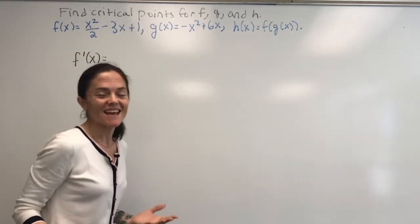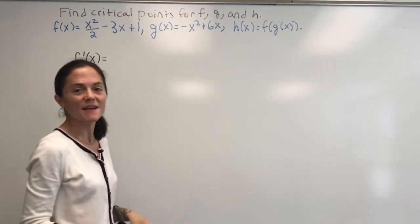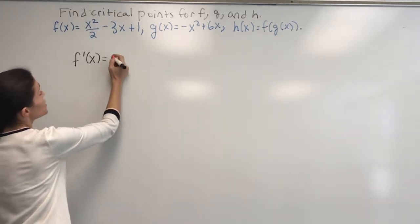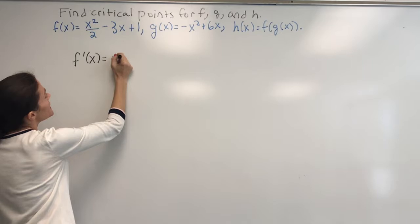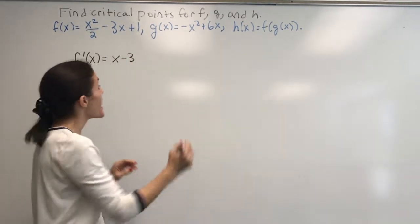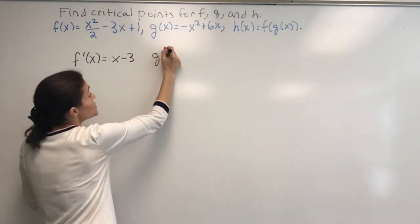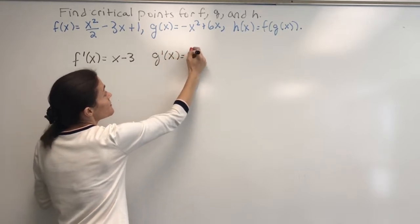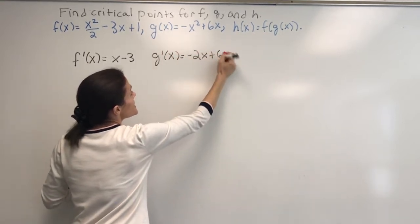f and g are just quadratic polynomials. We use the power rule, so we get x minus 3 for the derivative of f. For the derivative of g, we get minus 2x plus 6.